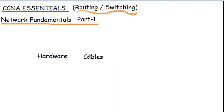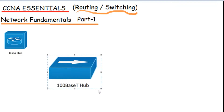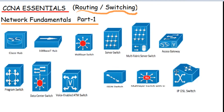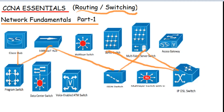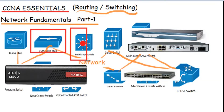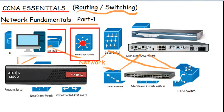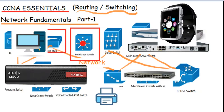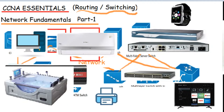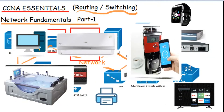First, let's talk hardware and cables so we can get it out of the way. There are many types of devices which, when connected with each other, form what we call a network. You got the famous routers and switches, firewalls, hubs, layer 3 switches, and devices like a PC, a laptop, a phone, printer, smart disk, smart that, air conditioner, a bathtub, a coffee machine — you name it.